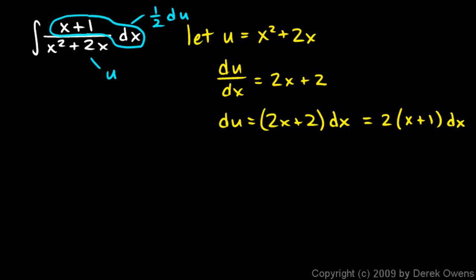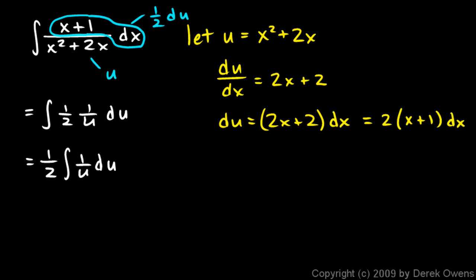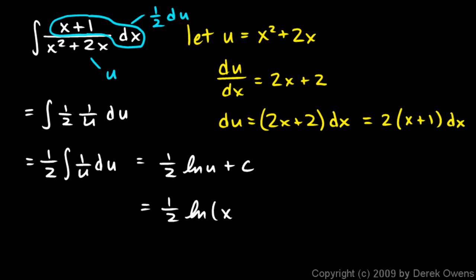Down on the bottom, x²+2x is u. So my original integral has one-half du in the numerator and u in the denominator, rewritten as one-half times the integral of 1 over u du. That's one-half times the natural log of u plus C. Substituting back, u is x²+2x, so the answer is one-half times the natural log of x²+2x plus C.